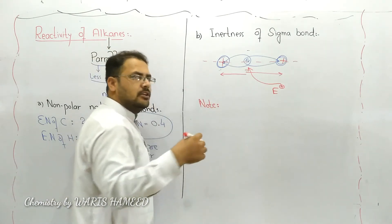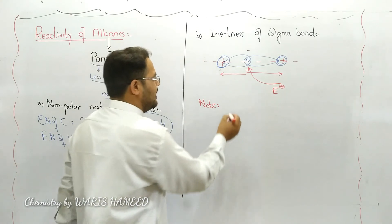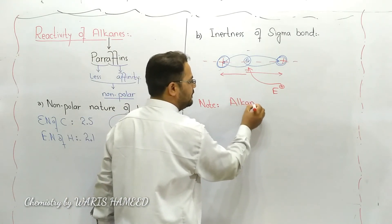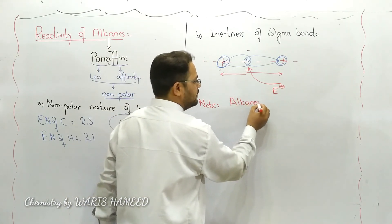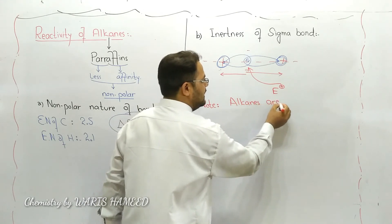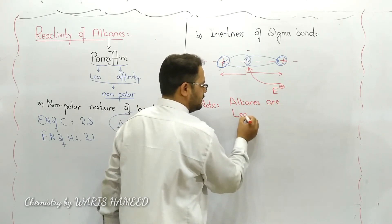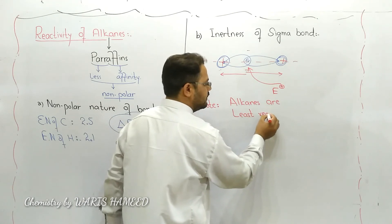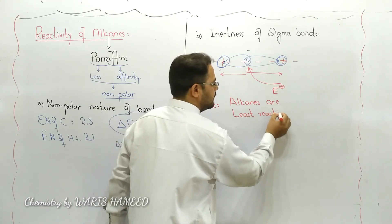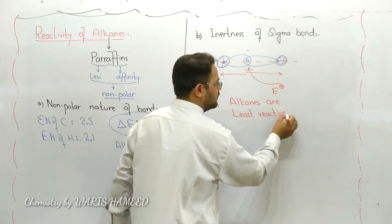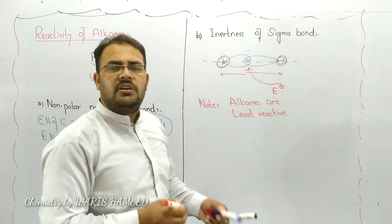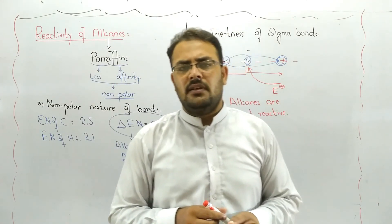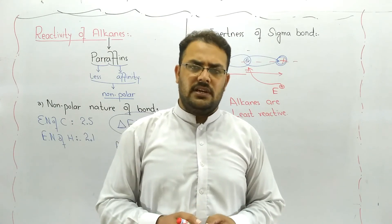We conclude that alkanes are least reactive. This is an important question in the intermediate class: why are alkanes least reactive?